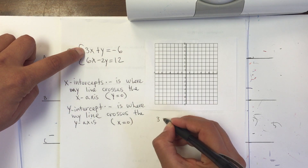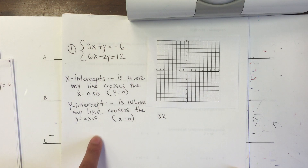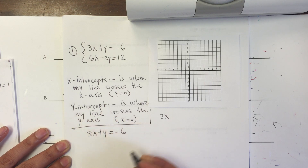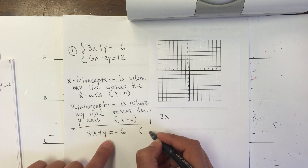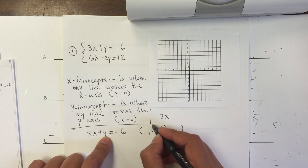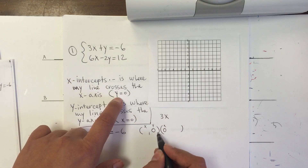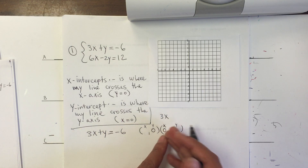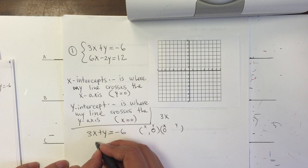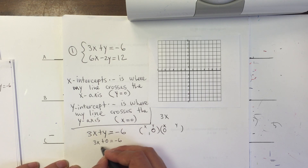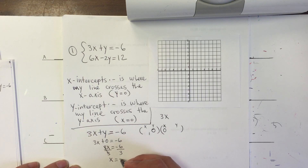For the first equation, 3x plus y equals negative 6, I'm going to replace the y first with 0, and then I'm going to replace x with 0. For the x-intercept, y equals 0. I replace y with 0, so 3x plus 0 equals negative 6. Then 3x equals negative 6. Divide both sides by 3, and so x equals negative 2.